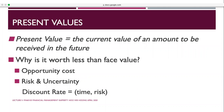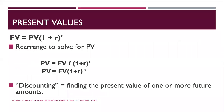Present value means the current value of an amount to be received in the future. It is worth less than the face value because of opportunity cost, time value of money, and uncertainty. Discounting takes into account the discount rate, time, and risk. To calculate present value, take the future value formula FV = PV × (1 + r)^t and rearrange it to isolate PV.